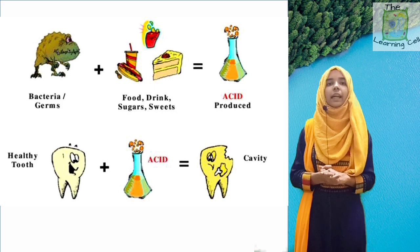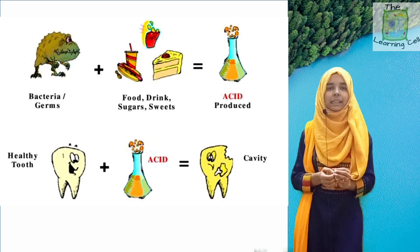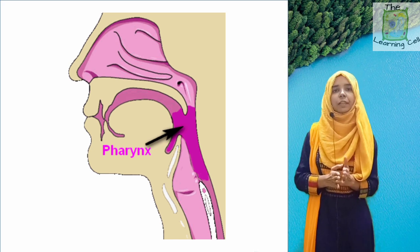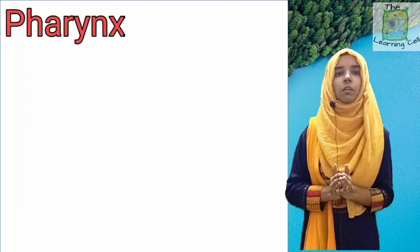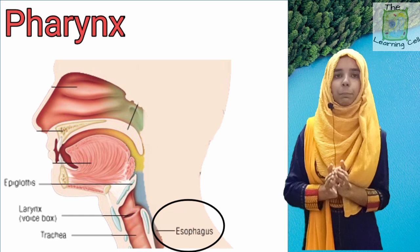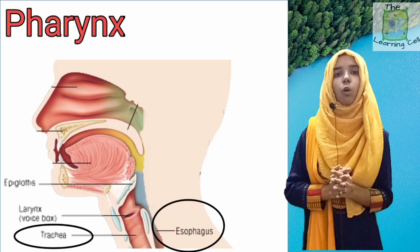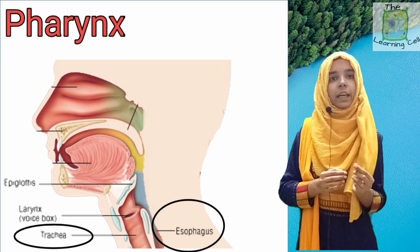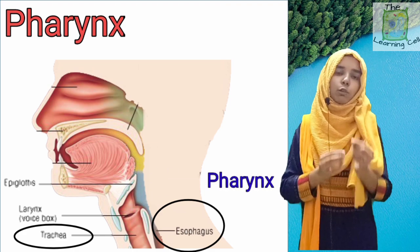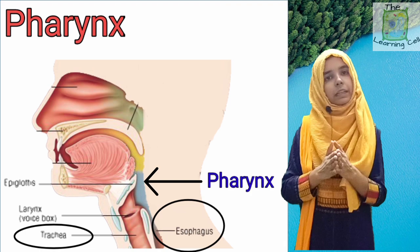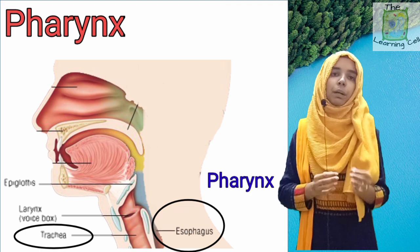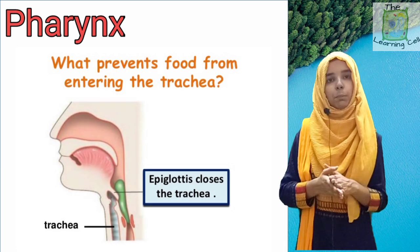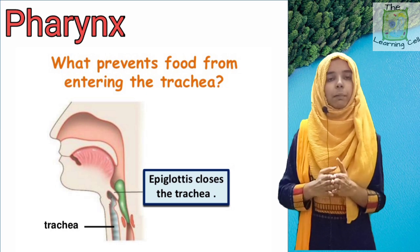Once we swallow our food, it moves downward to enter the pharynx. Pharynx is the common opening for the food pipe and the wind pipe. We have two passages in our body: one is the food pipe or esophagus for the passage of food, and the other is the trachea or wind pipe for the passage of air. These two share a common area known as the pharynx, and after that both the food pipe and wind pipe run adjacent to each other. When we swallow food, a flap-like structure known as the epiglottis covers the wind pipe so that the food enters the food pipe and not the wind pipe.